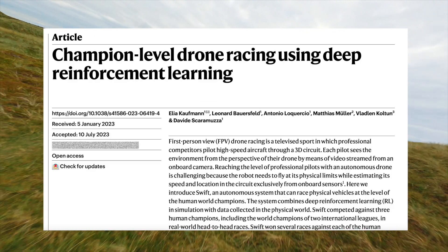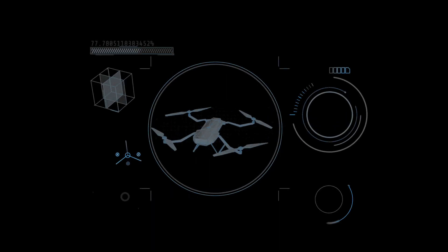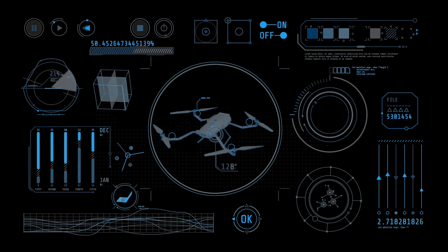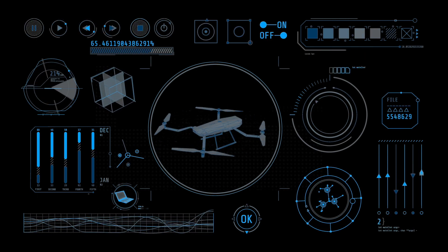A system named SWIFT, capable of flying drones to win races against human competitors in a head-to-head championship, is presented in a Nature paper.